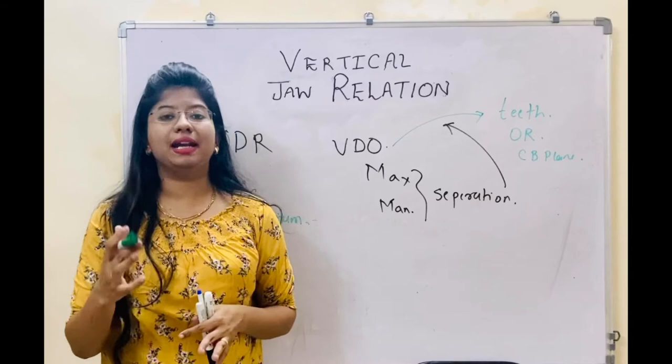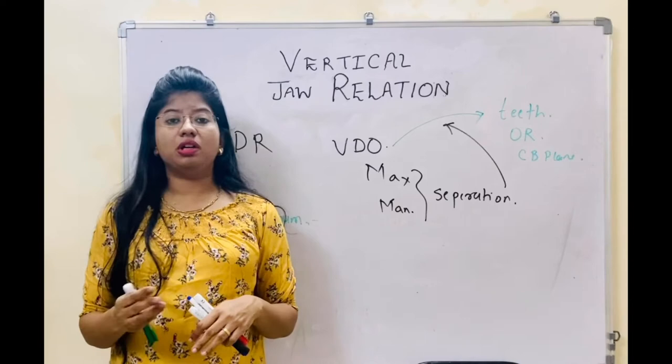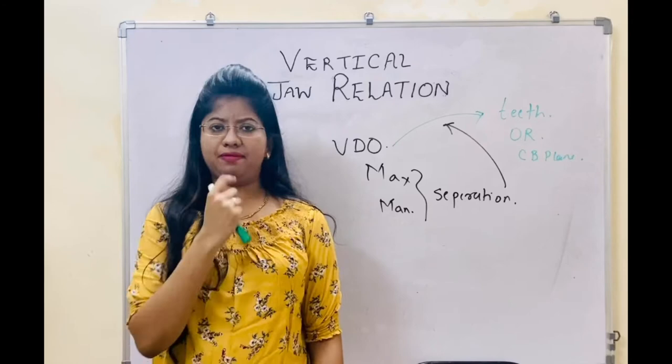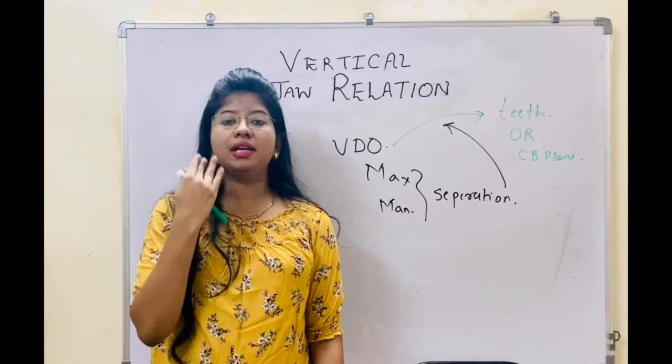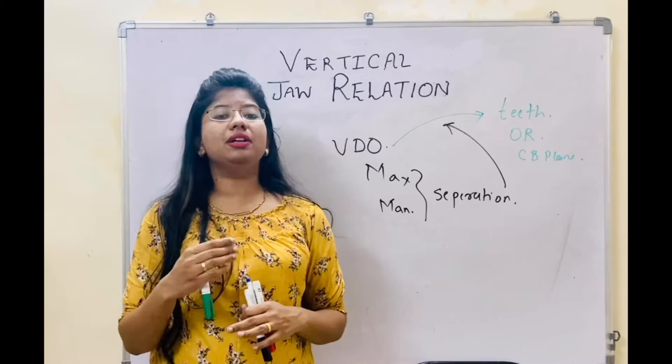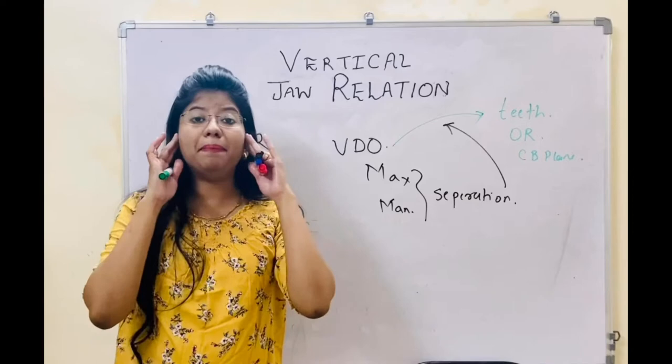What will happen if you do not record it properly? If the vertical dimension is in an increased condition — if I give you a denture at an increased dimension — there will be stress all over that area. The muscles will be in a condition of stretch, which the patient does not want. There can be increased facial height, which will not be aesthetic at all. There can be pain in the temporomandibular joint and there can be a clicking sound.